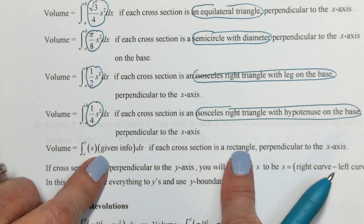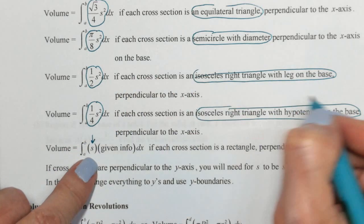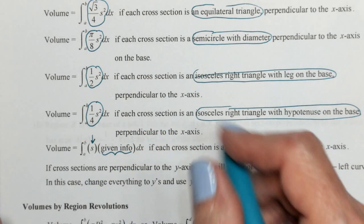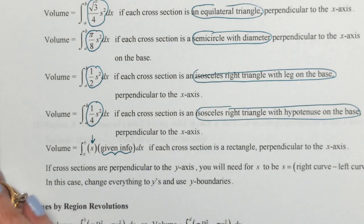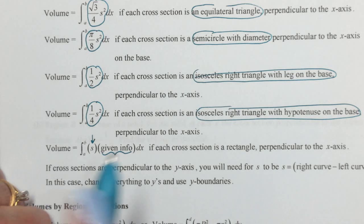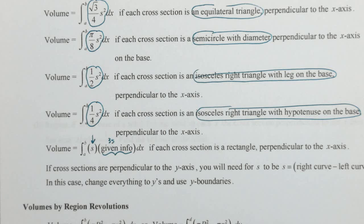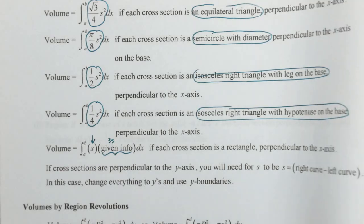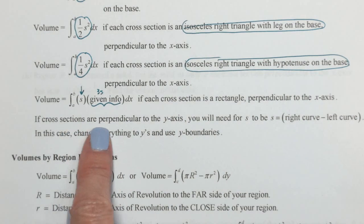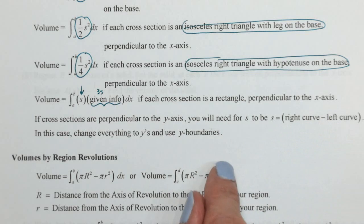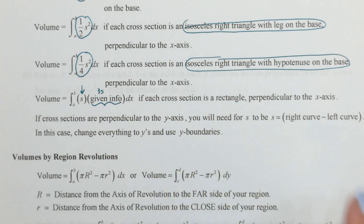For a rectangle, one dimension is s and the other dimension is something they give you — maybe the height is 5, 7, pi, or 3 times s. Whatever it is, you write it there: s times whatever they give you. If the cross sections are perpendicular to the y-axis, your s's will be right minus left instead of top minus bottom — change to y boundaries.